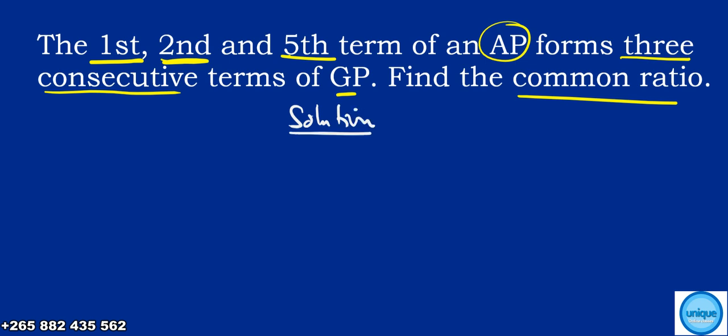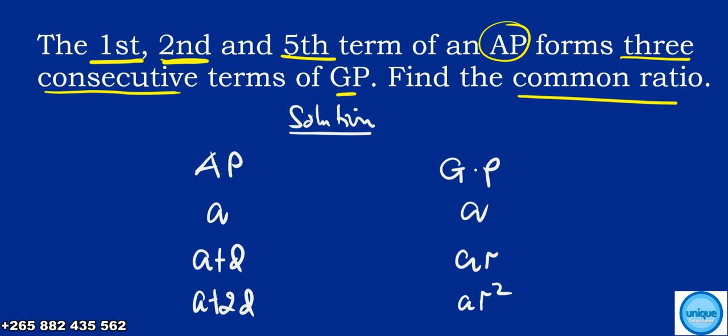Just a reminder: for AP and GP, the first term is denoted by a. In AP, the second term is a plus d, where d represents the common difference. Whereas in GP, the second term is a times r, where r is the common ratio. The third term is a times r squared.